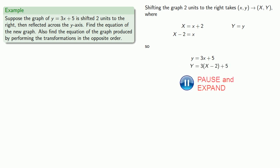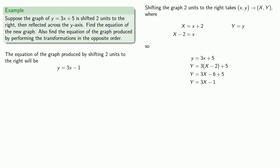If we shift the graph 2 units to the right, our original points (x, y) will go to the new points (capital X, capital Y), where our new x and y coordinates are, which we can solve for the original x and y coordinates. We'll replace these in our original equation. Do a little algebra. And if it's not written down, it didn't happen. The equation of the graph produced by shifting 2 units to the right will be y equals 3x minus 1.